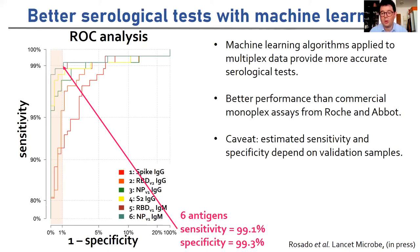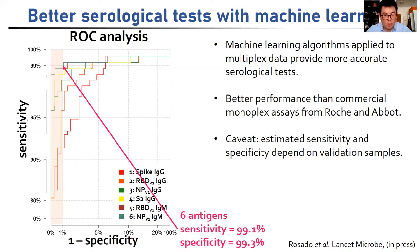A very important caveat is that you should always be skeptical of estimates of sensitivity and specificity, including from me, because they're always going to be dependent on validation samples. It's very easy to get high sensitivity if you're getting serum from severely ill patients who have been in the hospital for a month. What's much more difficult is diagnosing individuals with mild, asymptomatic, or older infections — and that's what we've been doing.